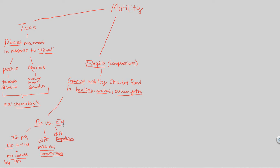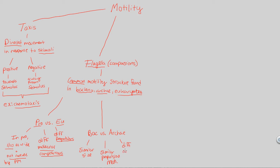Now, what about bacteria versus archaea? These two are quite similar to each other — they both fall under the prokaryotic realm. Their flagella are similar in size because both are similar in overall cellular structure. They also have a similar propulsion mechanism — they move almost exactly the same way. The slight difference is that they have somewhat different molecular compositions, though we don't need to know the specific details. Everything else is pretty much the same.